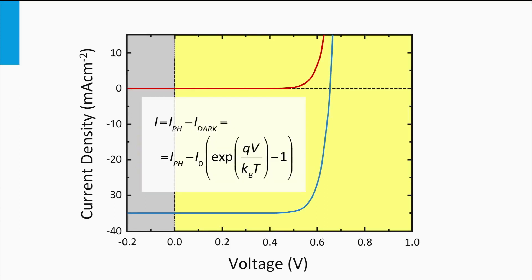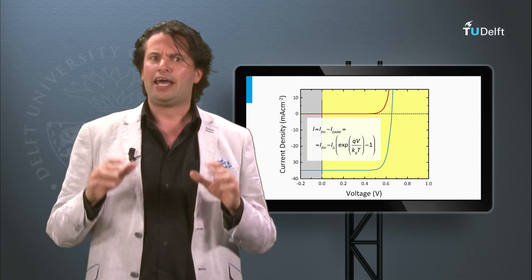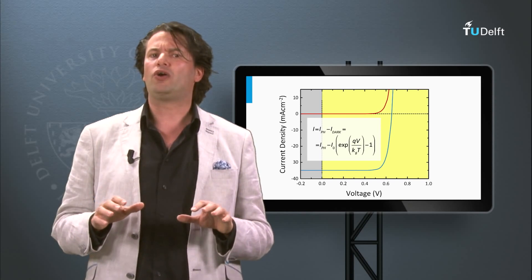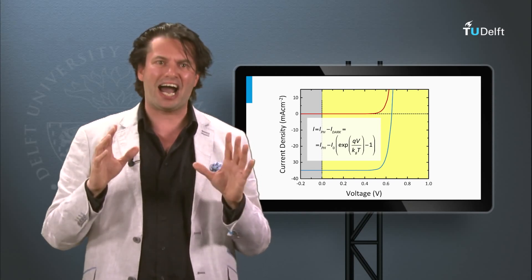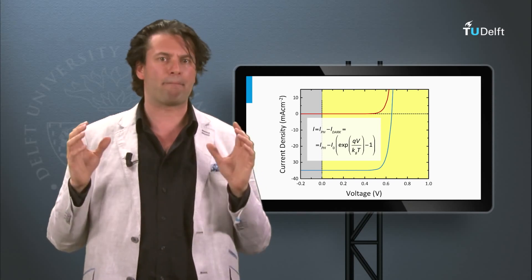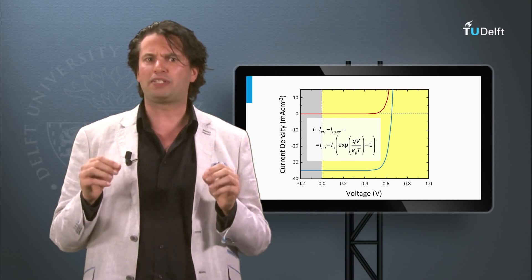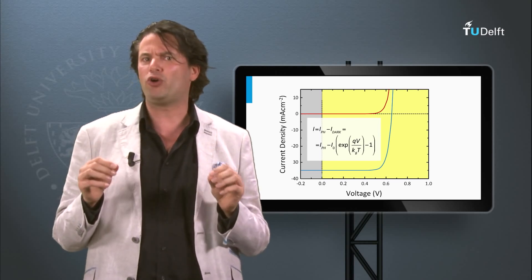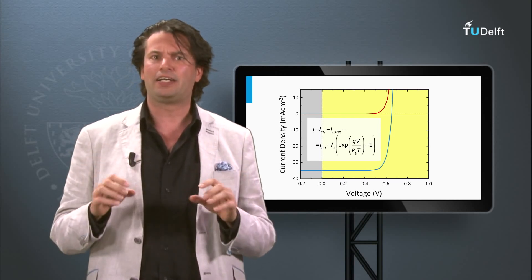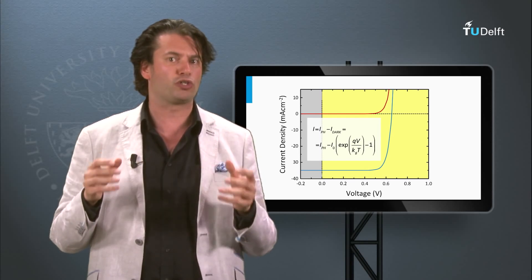The IV curve of an ideal solar cell can be described by a simple equation. The total current generated by an illuminated P-N junction is the photocurrent minus the current of the P-N diode in the dark. In the equation so far we have used current I, which has the unit Ampere. This is sometimes not the most convenient unit to express the electrical response of a solar cell to light.